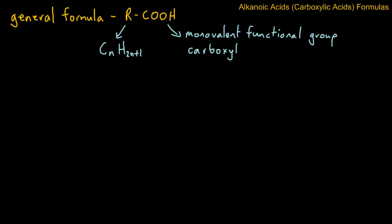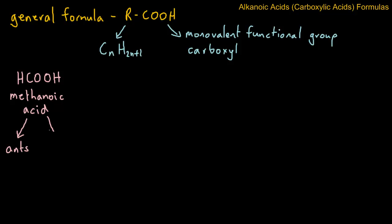We're going to take a quick look at the first four acids in this homologous series. The first one has the formula HCOOH — there's actually only one carbon atom — and this is methanoic acid. It's found in ants, and the old name, if you want, was formic acid. This is the thing that stings if an ant bites you.